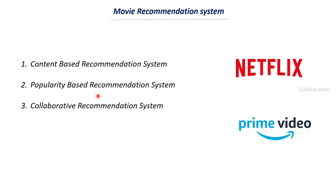The second type is the popularity-based recommendation system, which recommends movies or series that have been very popular. For example, Netflix has a column called 'Top 10 movies in India' and 'Top 10 movies of all time.' Popularity increases when more people watch those films, and it also relies on the popularity of actors and directors.